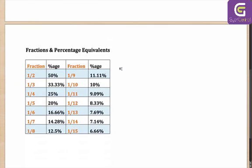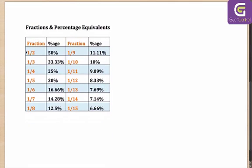Let's look at them. The fraction one-half is actually equivalent to 50%, which you might already know. Very similarly, one-third is 33.33%, one-fourth is 25%, and one-fifth is 20%. In case you are wondering how I am calculating these values — if one, or the total, corresponds to 100, then what will one-fifth correspond to? It will correspond to 20%.